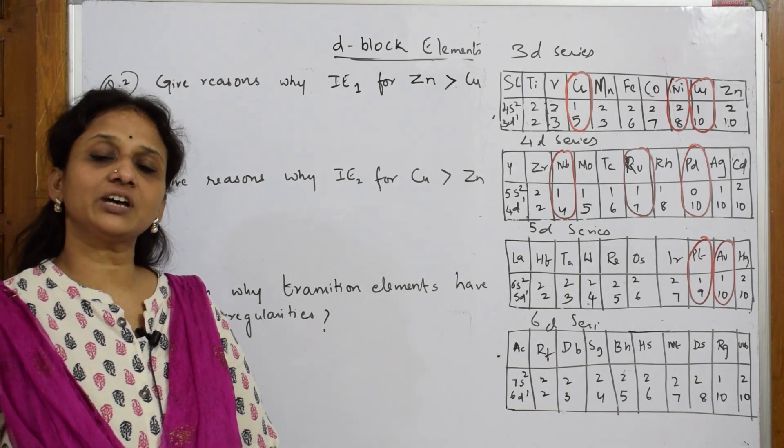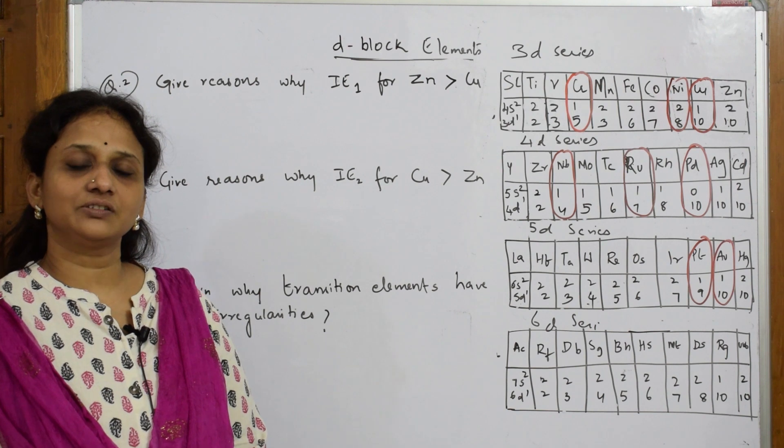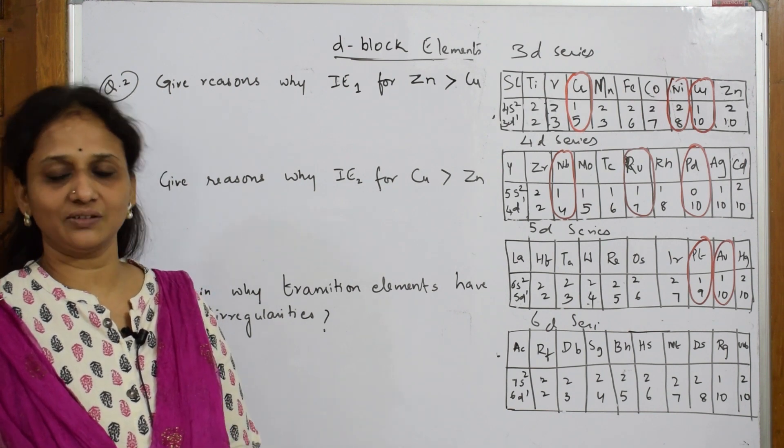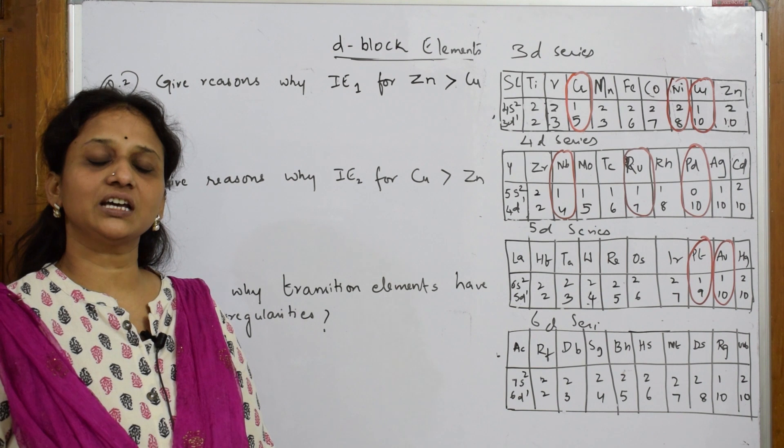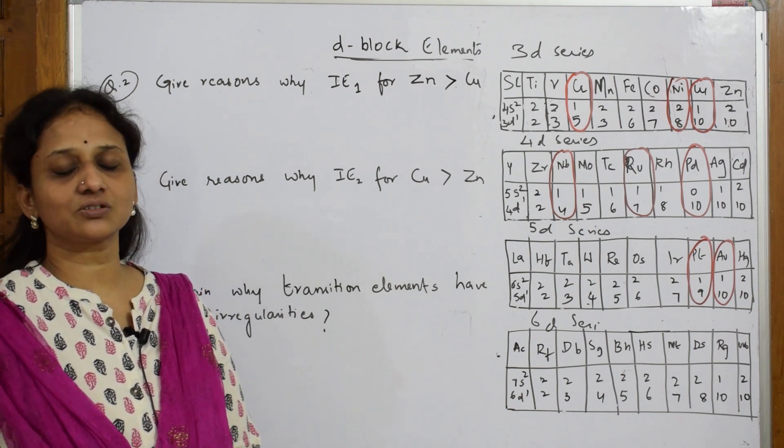We have d-block elements where the general configuration is ns and n minus 1 d. Where is the electron entering? Every time the electron is entering into the d shell. That's why it is called the d-block element.